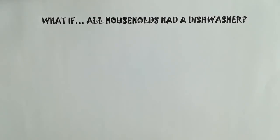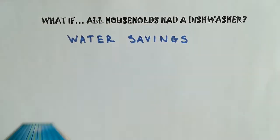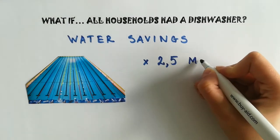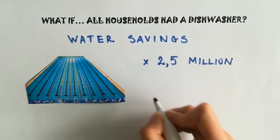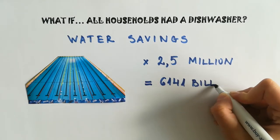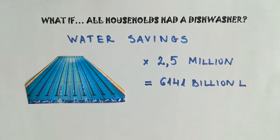Let your imagination run free. What if all EU households stopped doing their dishes by hand and instead used the dishwasher? We would save the equivalent of 2.5 million Olympic swimming pools each year. This represents 6.141 billion liters of water. Impressive, right?